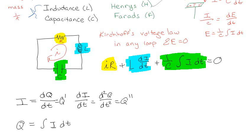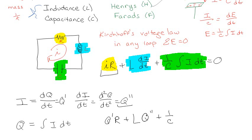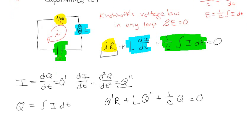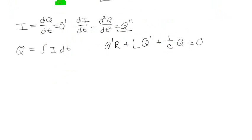So I can do a quick plug-in: instead of I, write Q prime; instead of L·di/dt, write L·Q double prime; and replace the integral of I dt with just Q. The whole equation becomes L·Q'' + R·Q' + (1/C)·Q = 0.